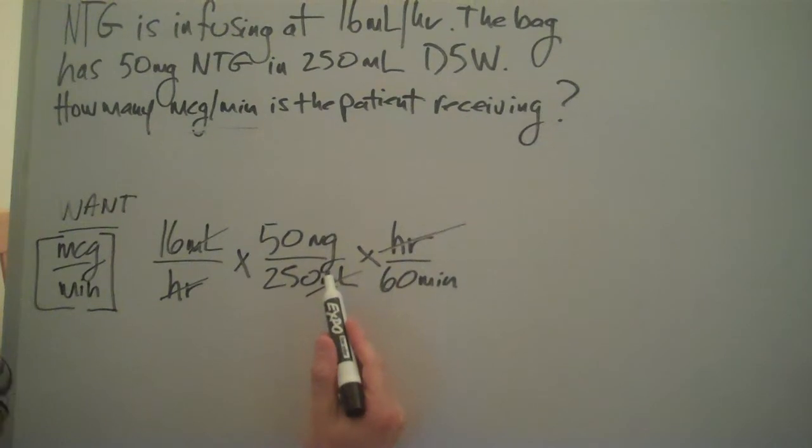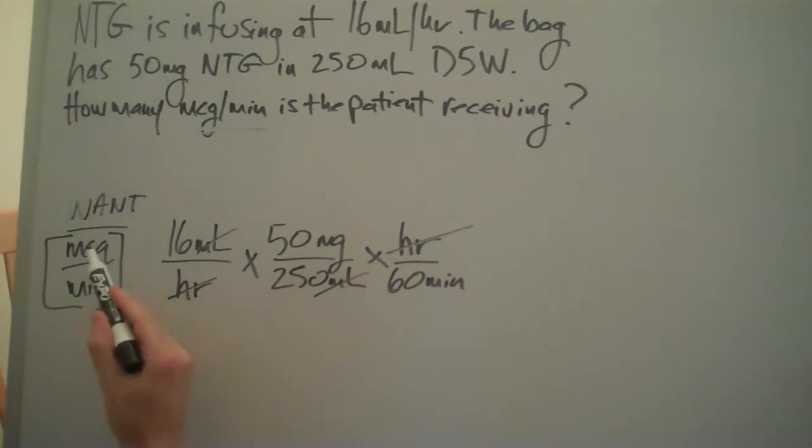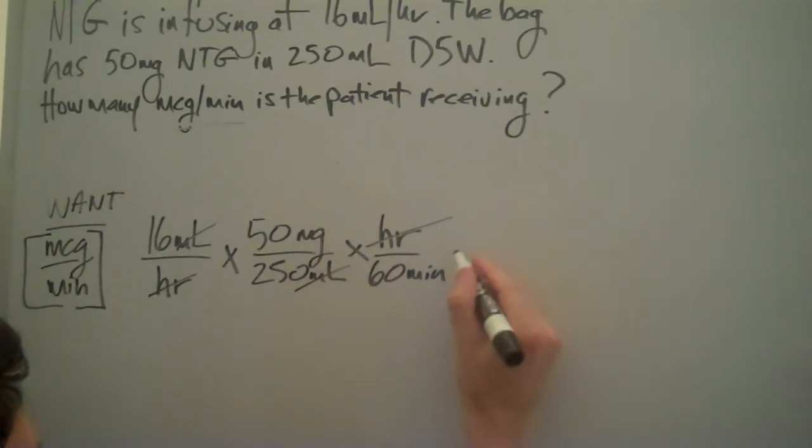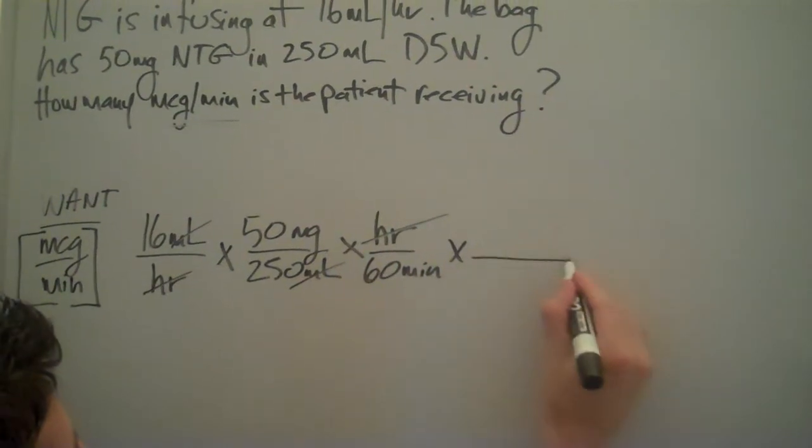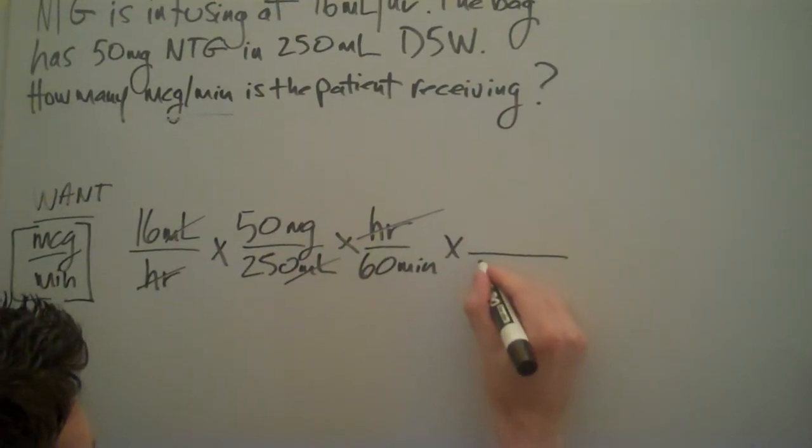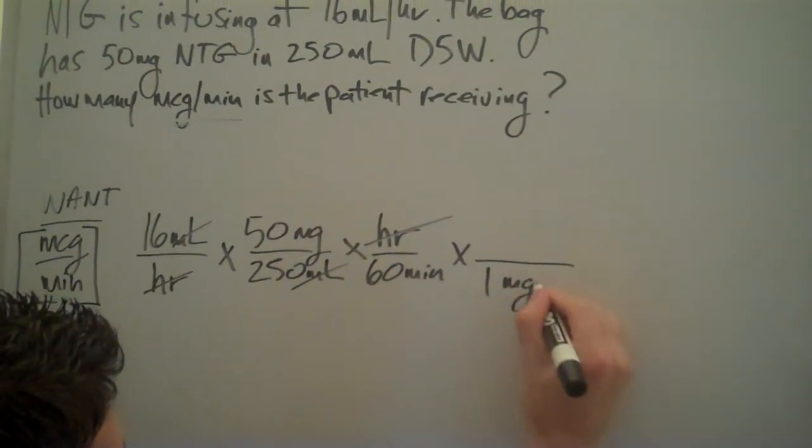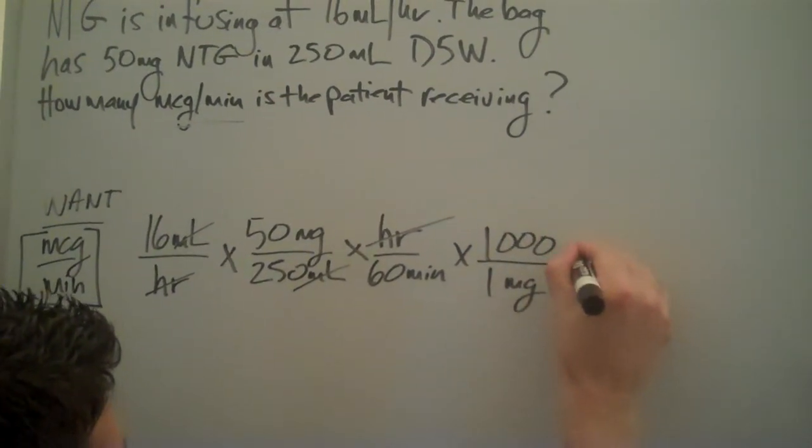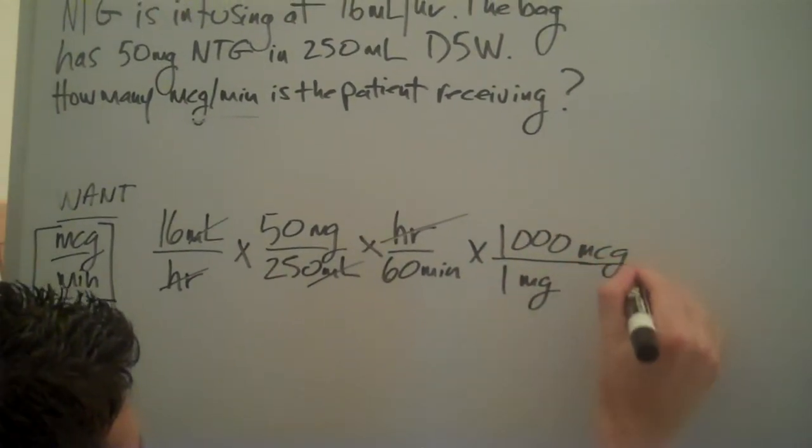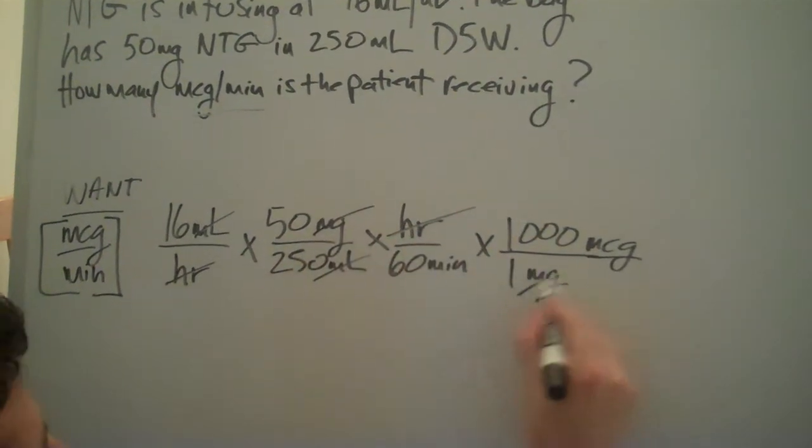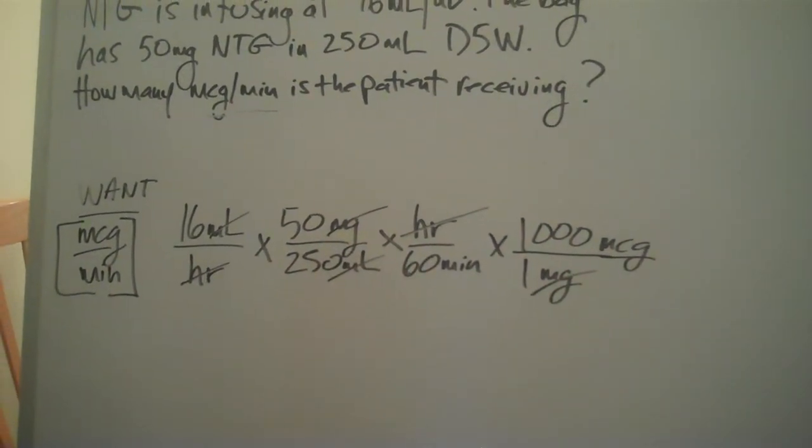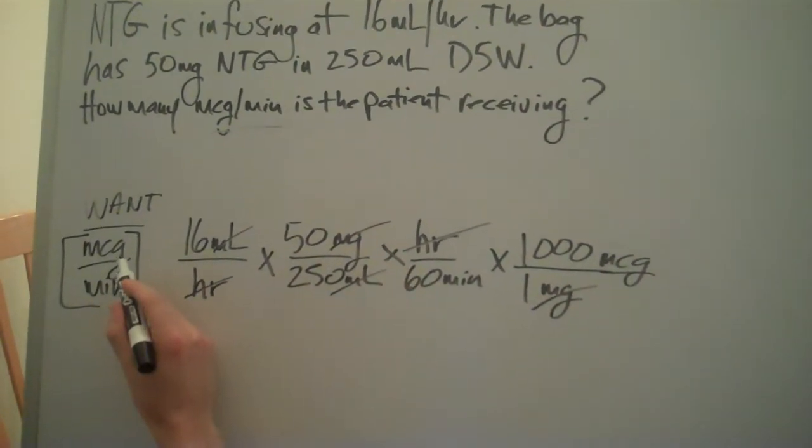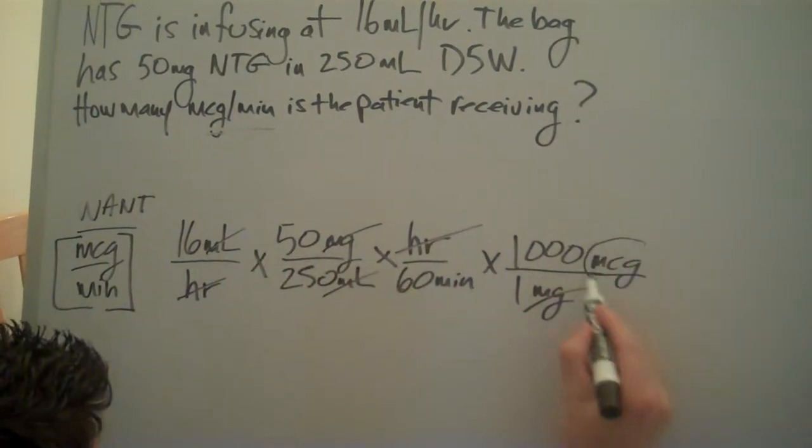We have milligrams. We need to solve for micrograms. Our conversion: one milligram is equivalent to a thousand micrograms. Now we can get rid of our milligrams. We want micrograms and that is exactly what we have.